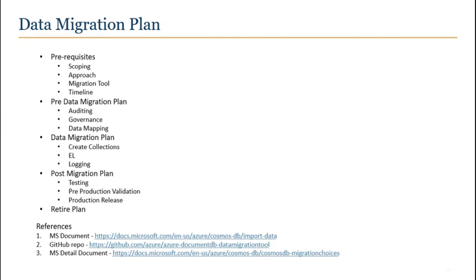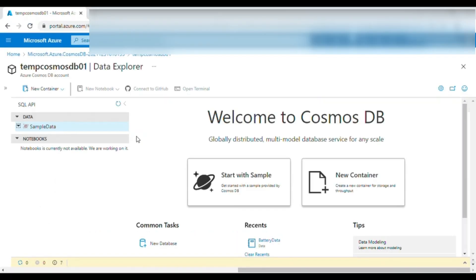If any issues are found, you can download data from the source Cosmos DB as a JSON file and use that JSON file as the source for loading into the target Cosmos DB — that is another valid approach. In our case we used the migration tool to load everything from source to target. Now for a short demo: we have connected to the target Cosmos DB. The database ID is 'sample data'. Let's create the container first.